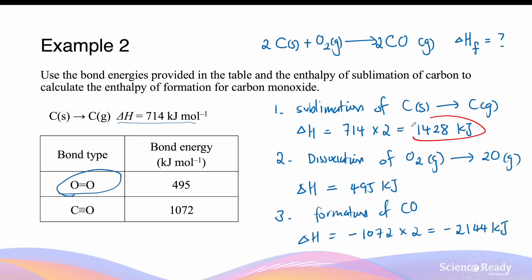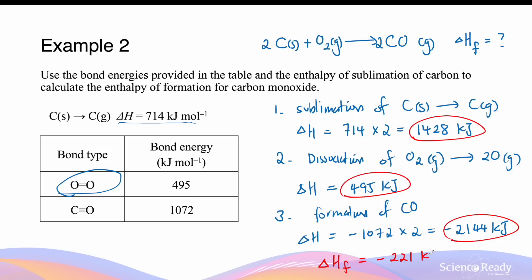When we add these three values together, the net enthalpy — which is the enthalpy of formation of this reaction — is equal to minus 221 kJ. And this is for two moles of carbon monoxide.